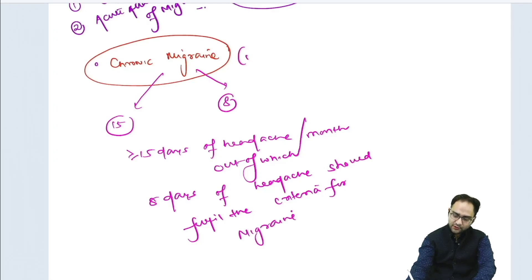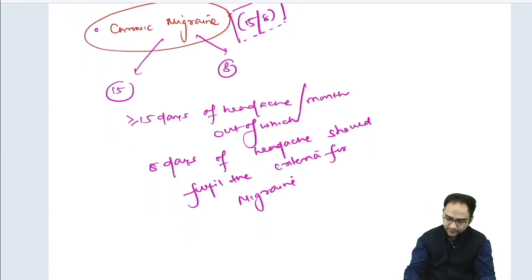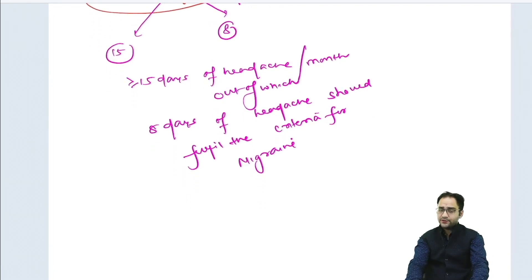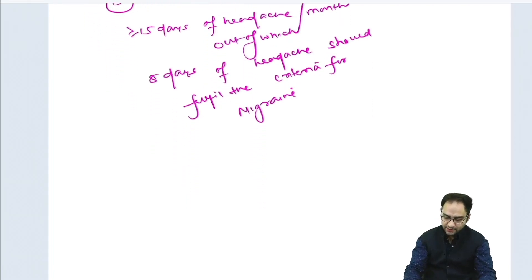If you remember the rule of 15-8, that's how you can define chronic migraine. They should have headache on more than 15 days per month, out of which 8 days should be migraine-like type of headache. Among other medications that we use for chronic migraine, the focus of discussion today is on CGRP antagonists.